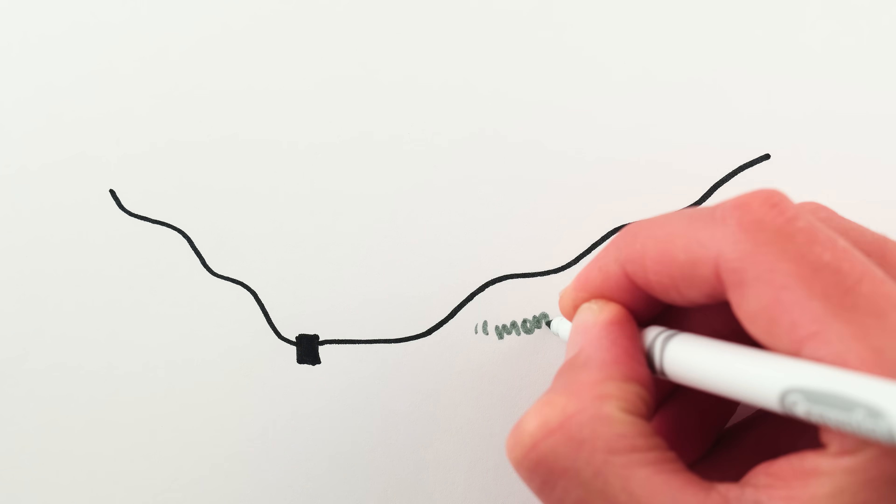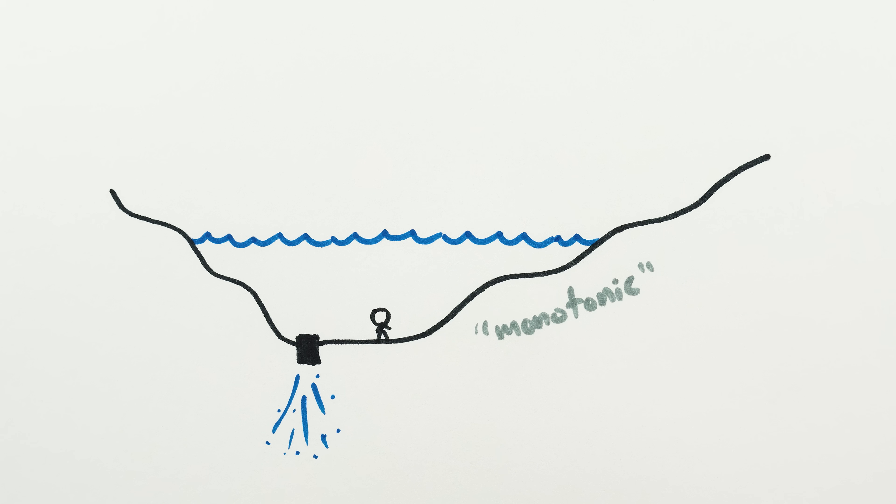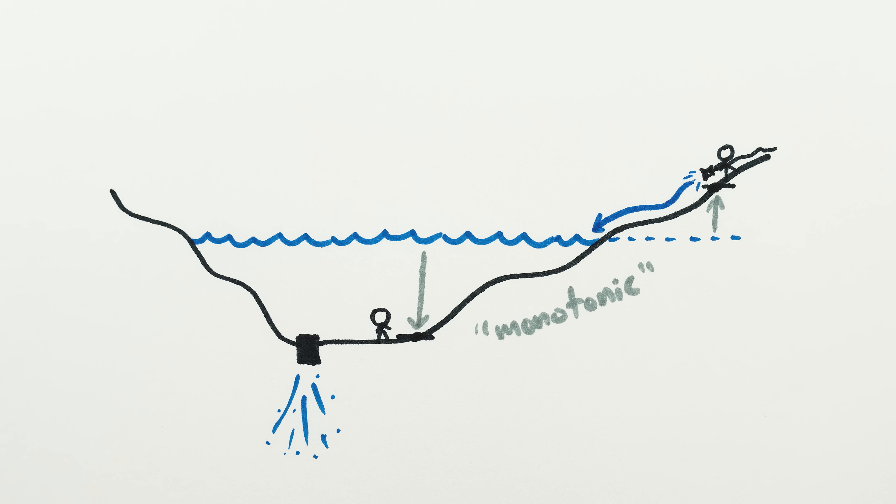If you have a seafloor whose elevation is always either constant or increasing as you go away from the drain, then whether or not a given location is underwater is easy to figure out – you just look at the height of the location and compare it with the water level. If it's lower than the level of the water, then it's underwater. If it's higher, then it's dry, because the water has a path to flow all the way downhill to the drain or the sea.